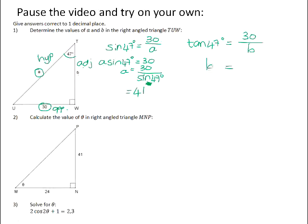So if we solve for B, it will work out exactly the same way. We would times both sides by B and then divide both sides by the tan of 47. So 30 degrees divided by the tan of 47 degrees also rounds off to 28.